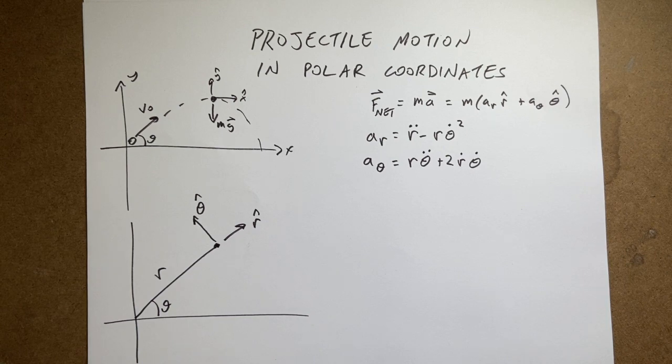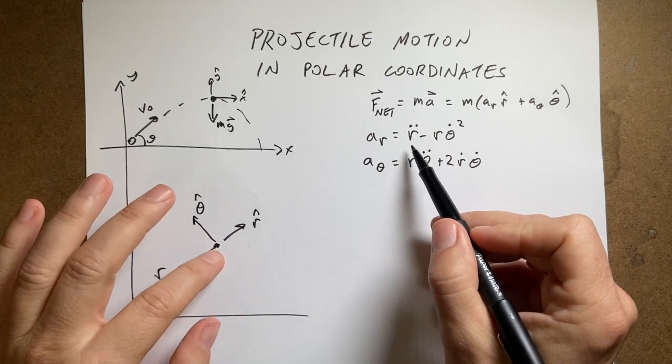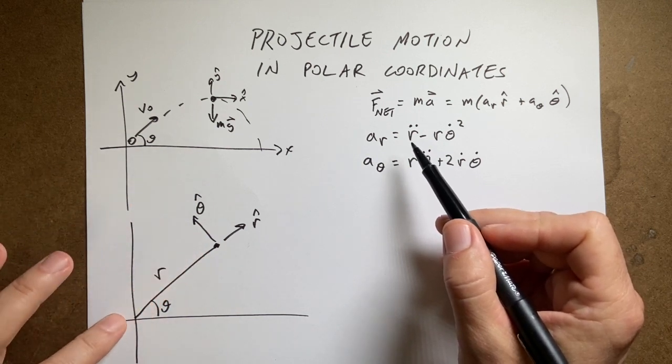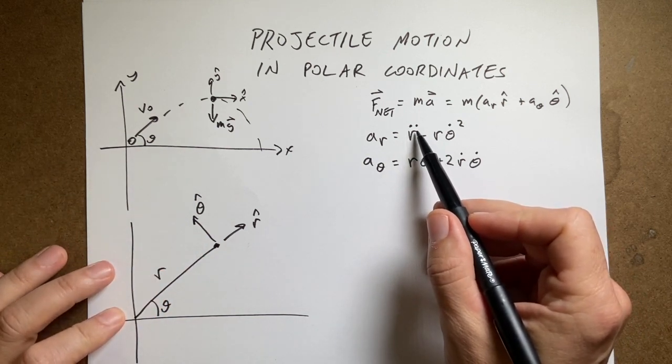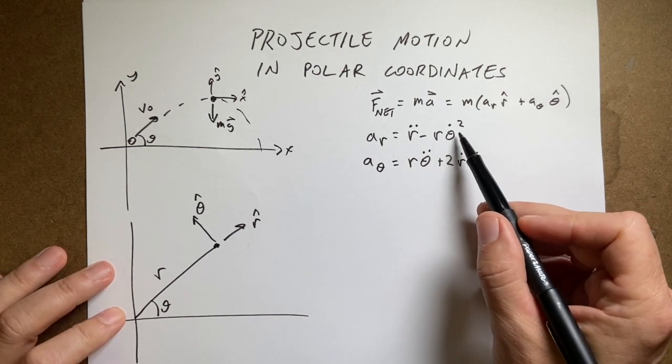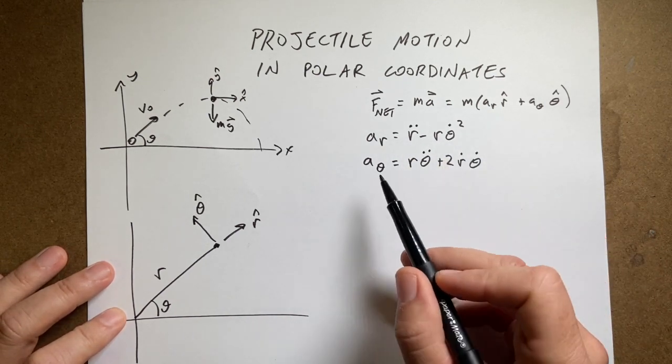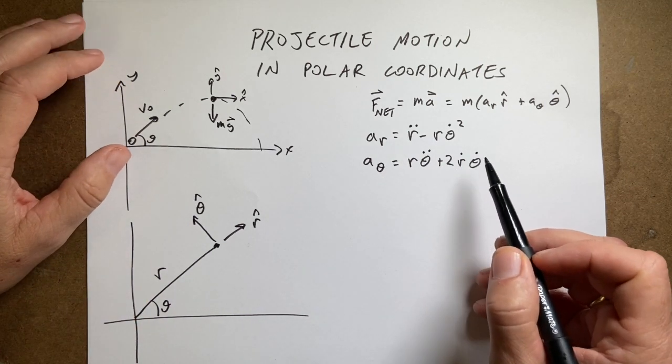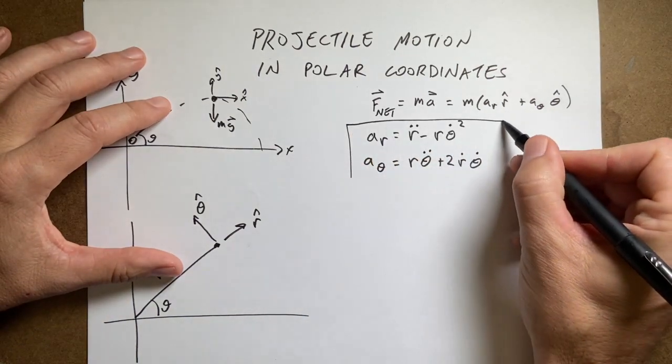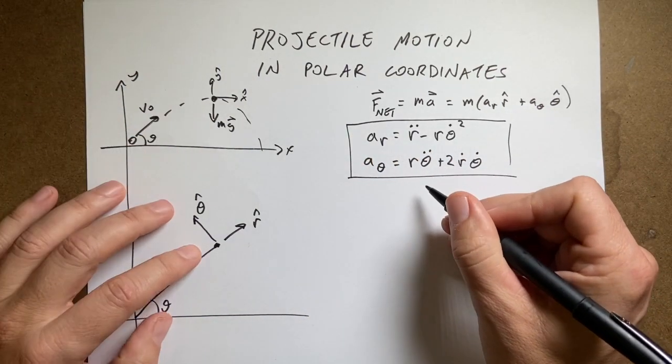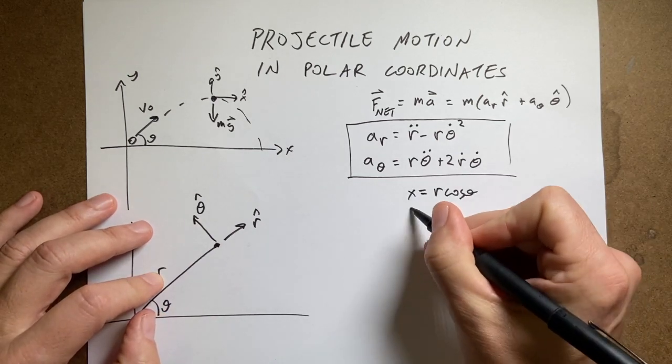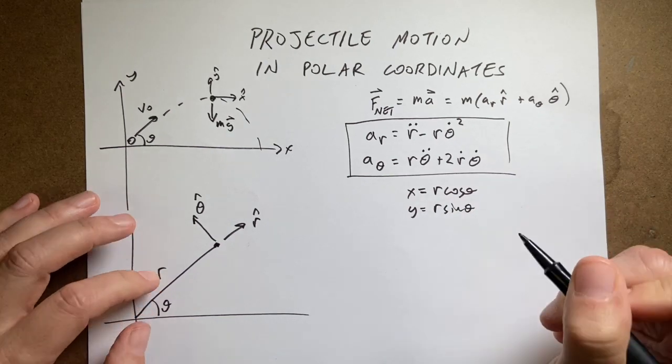I already did a video on the acceleration in polar coordinates. And we get this: the r component of the acceleration is r double dot minus r theta dot squared. The acceleration in the theta direction is r theta double dot plus 2 r dot theta dot. I should also say that x equals r cosine theta, y equals r sine theta. That's what we're going to use.